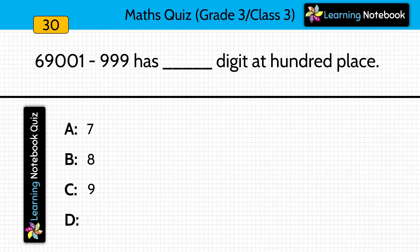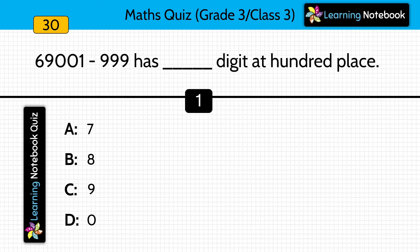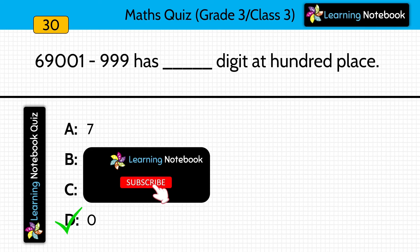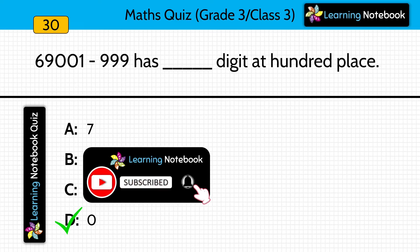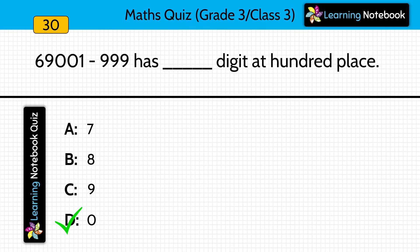69,001 minus 999 has dash digit at the 100 place. Answer is 0. First you have to subtract these two numbers — you will get the difference as 68,002. And there you will see that at the 100 place, the digit is 0.